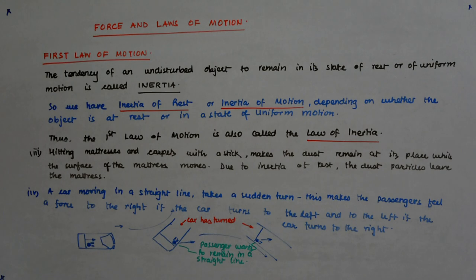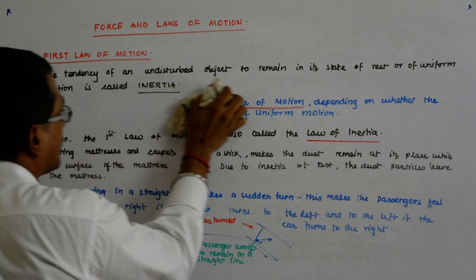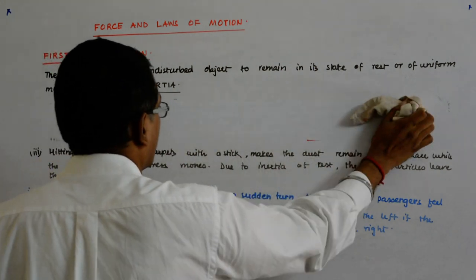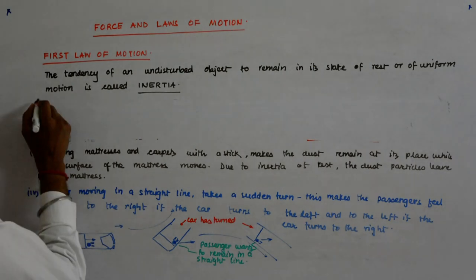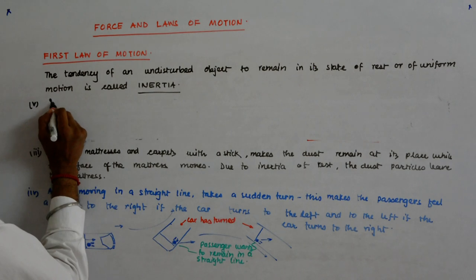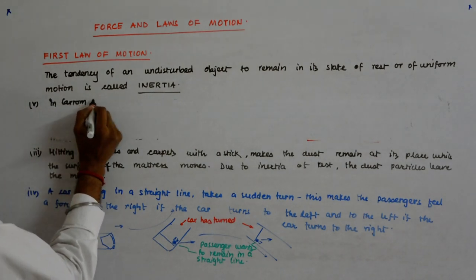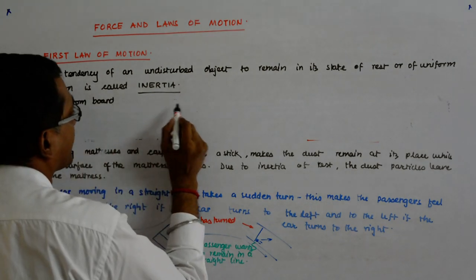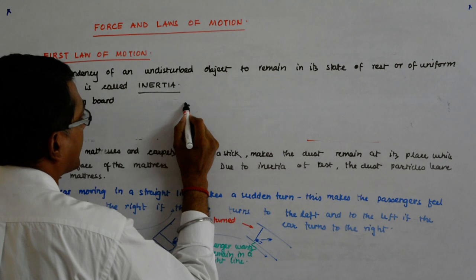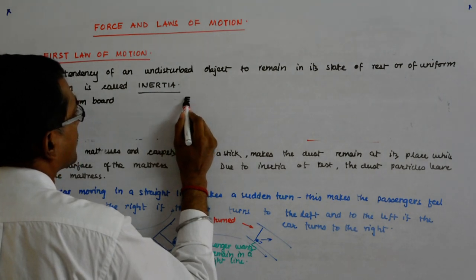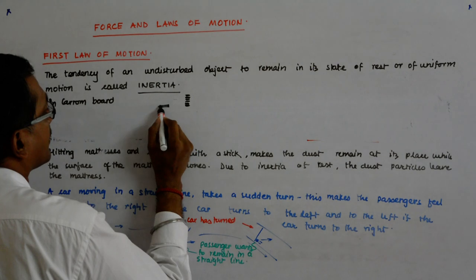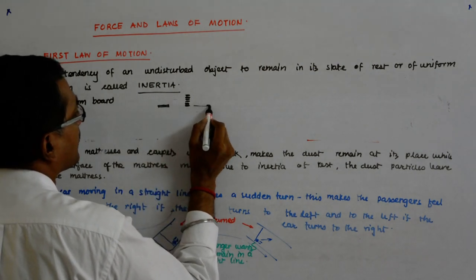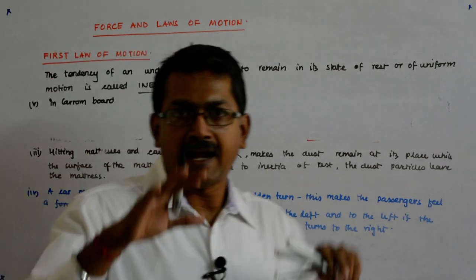Let us see one more example — the fifth one. Say you must have played carom board. In carom board there are coins stacked on top of each other — I am showing you the side view. There is a coin, and above that another coin and another coin. Suddenly with the striker you hit the bottom coin, and what happens is one of the coins will go away and the rest of the stack will remain.